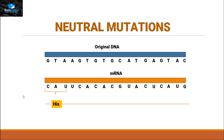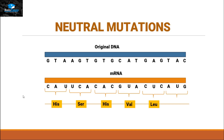This messenger RNA will code for a protein. Three nucleotides are going to make one amino acid. These are the codes for the different amino acids present. This is the piece of protein that we have.